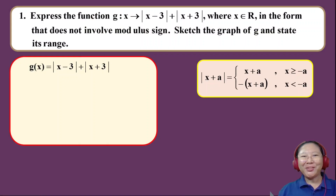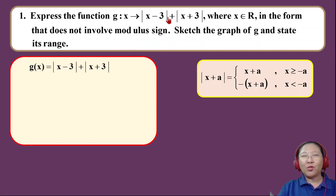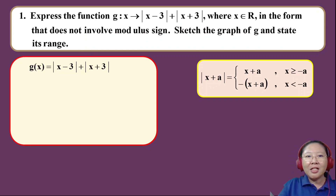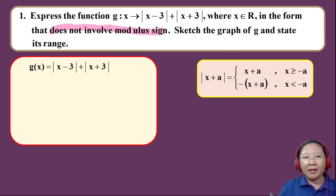So let's get to the question. In this question, they ask you to express the function g(x) = |x − 3| + |x + 1| in the form that does not involve a modulus sign. When they mention 'does not involve modulus sign,' it is equivalent to asking you to write it in non-modulus form.